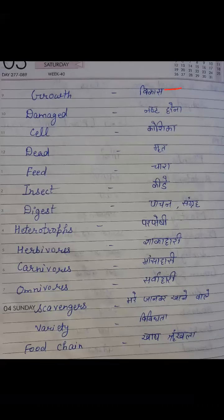Growth means vikas. Damaged means nasht hona. Cell — C-E-L-L — Cell means koshika. Dead — D-E-A-D — Dead means mrit. Feed — F-E-E-D — Feed means chaara. Insect — I-N-S-E-C-T — Insect means keede. Digest — D-I-G-E-S-T — Digest means pachan ya sangrah.